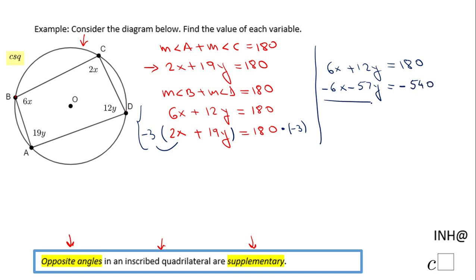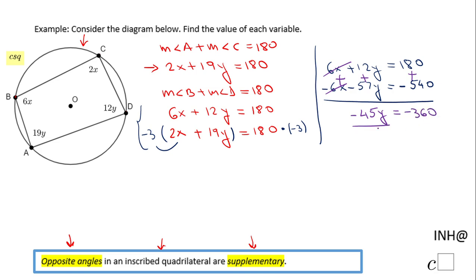Now notice that the X terms have the same coefficient, so we can add these two equations — the X terms cancel out. We're left with 12Y minus 57Y, which is negative 45Y, equals 180 plus negative 540, which is negative 360. Dividing both sides by negative 45 gives us Y equals 8.